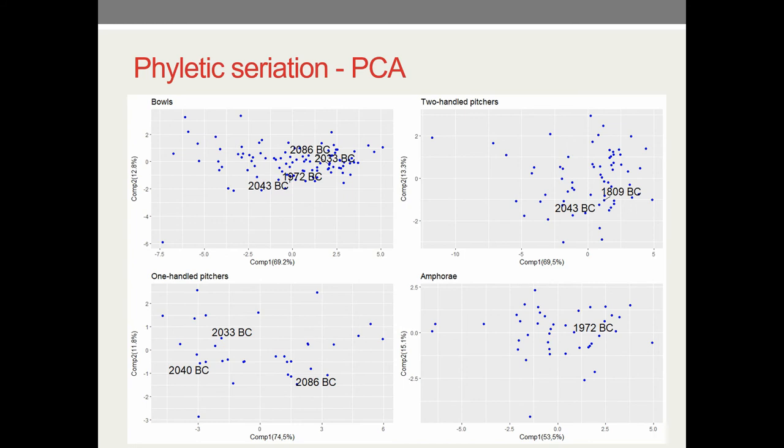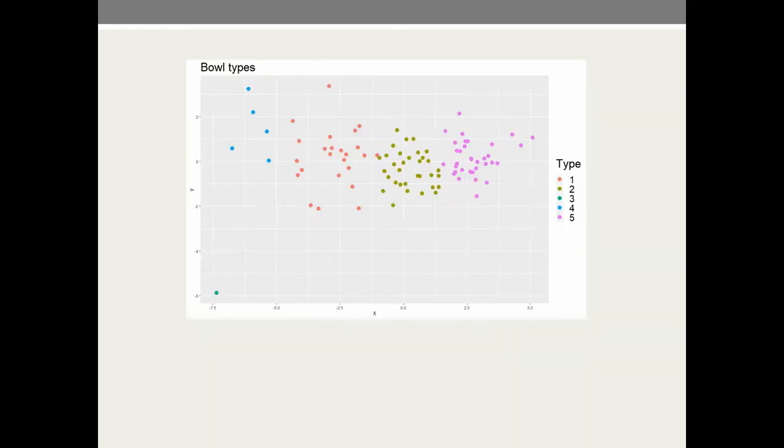Only for one-handle pitchers we got some possible chronology, but with only three dates it's hard to say something more about it. Here you can see some of the examples of the extreme values of PC1. That could be some kind of change in vessel shape in chronology but we're not sure about it.